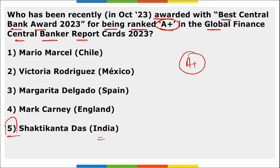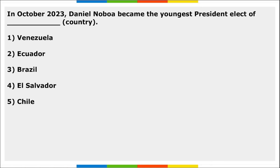This award was presented during the 30th Annual World Bank Awards ceremony held in Morocco. Next, Daniel Noboa became the youngest President-elect of Ecuador.